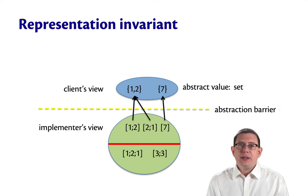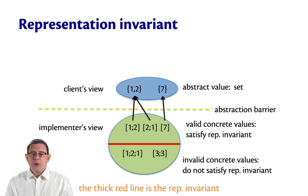It separates the meaningful concrete values from the unmeaningful concrete values. The valid concrete values are those that satisfy the representation invariant, or rep invariant for short. The invalid concrete values are the ones that don't satisfy.